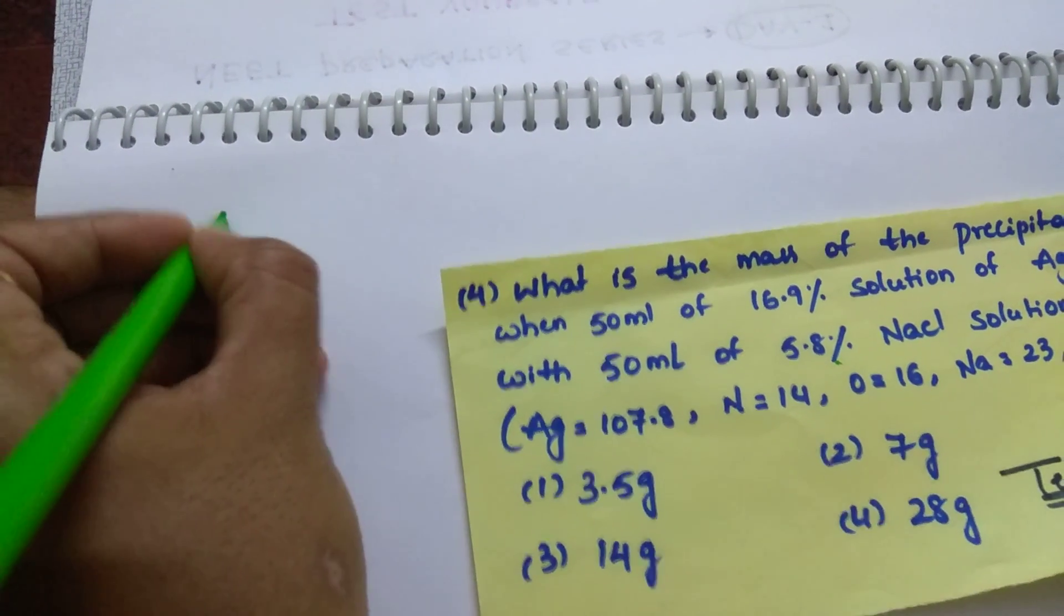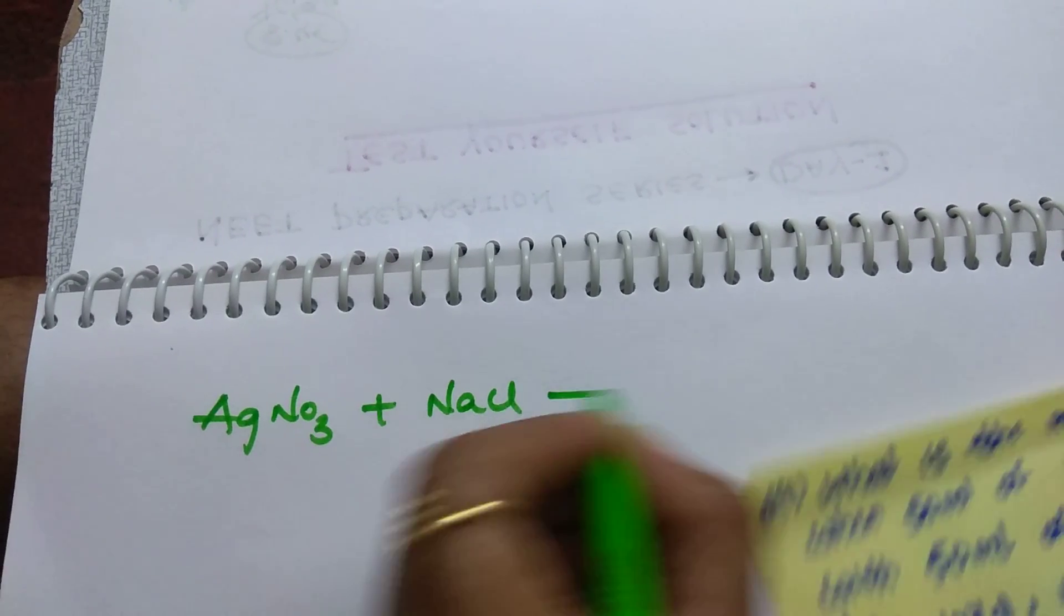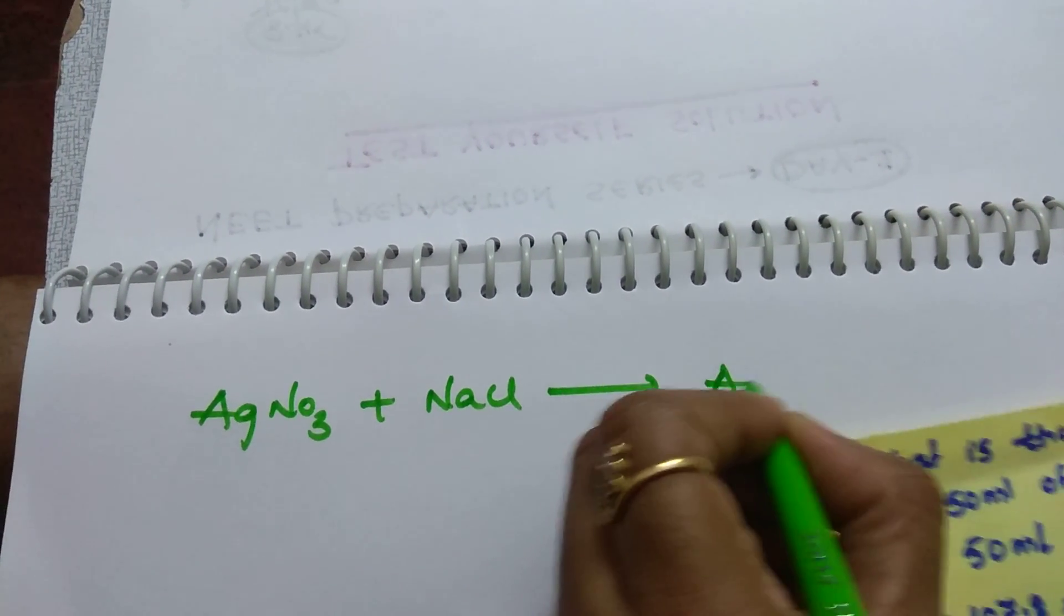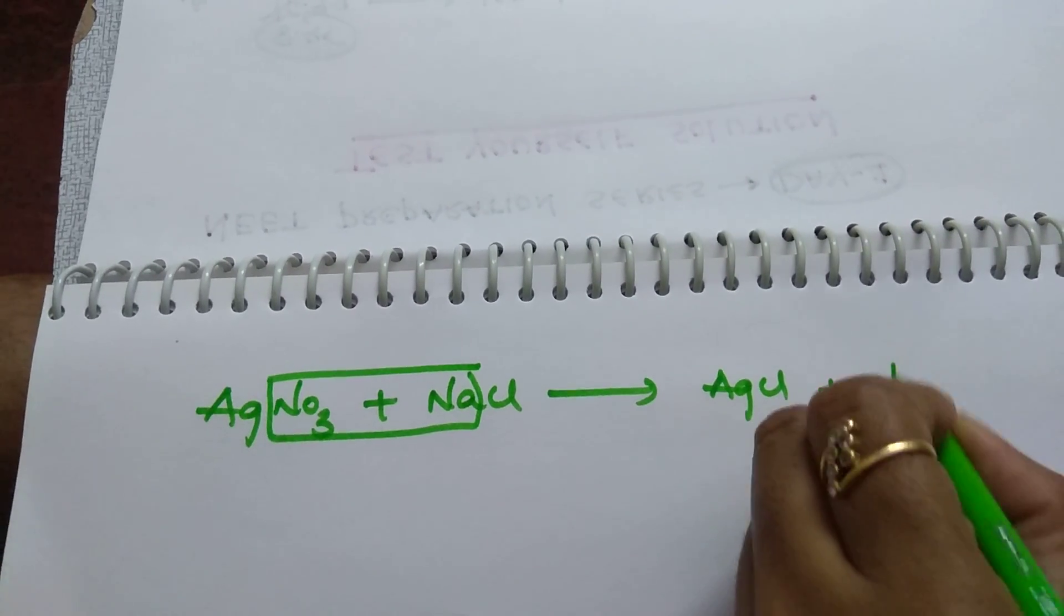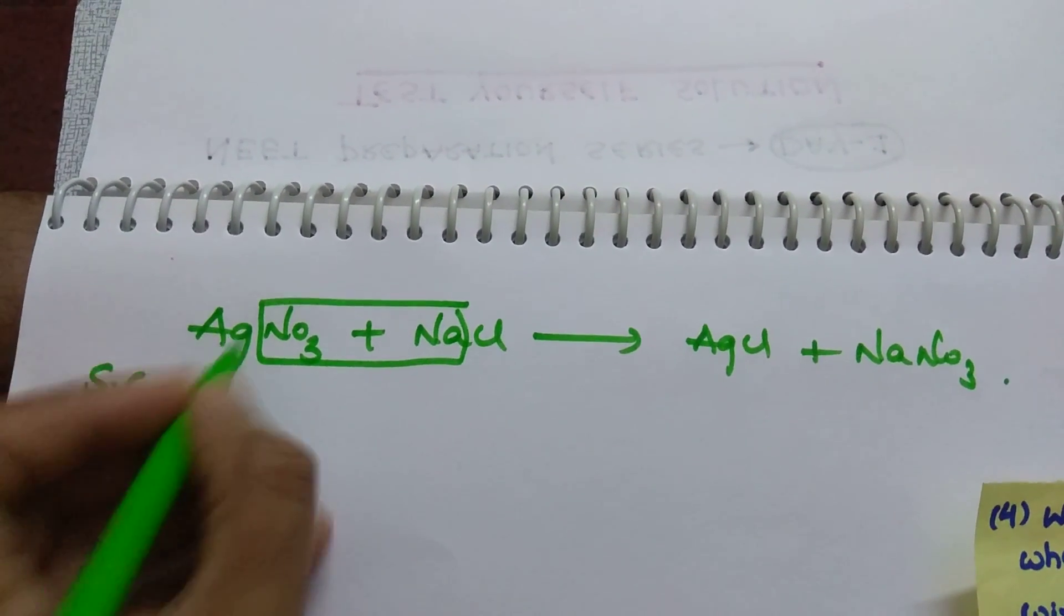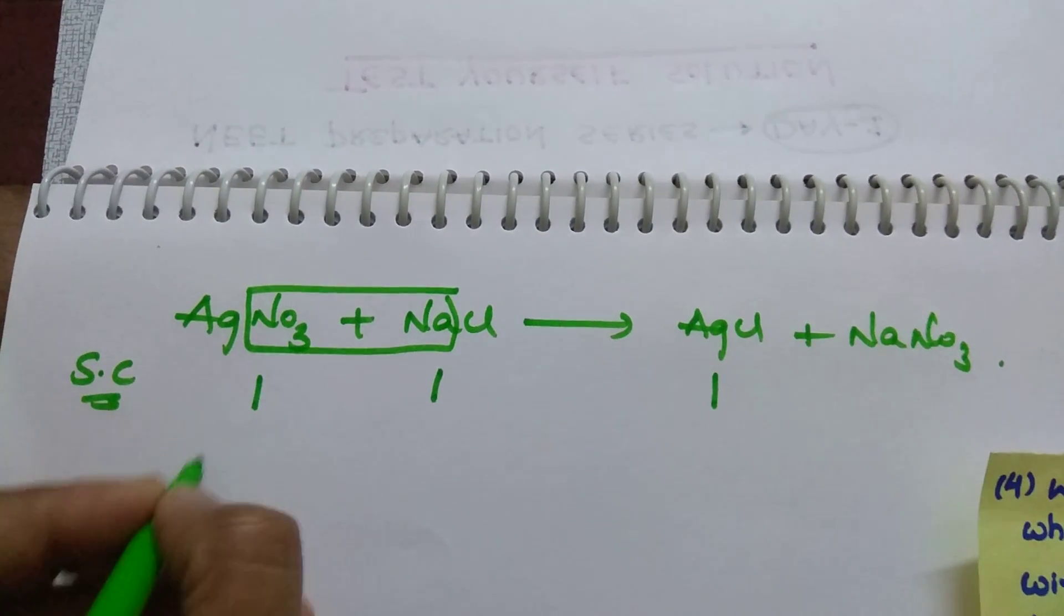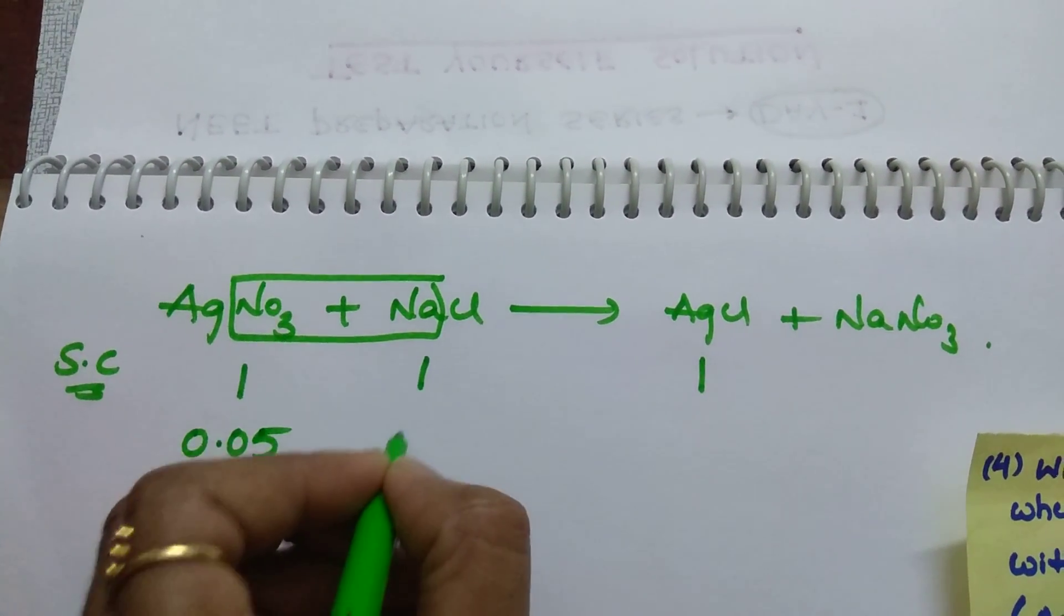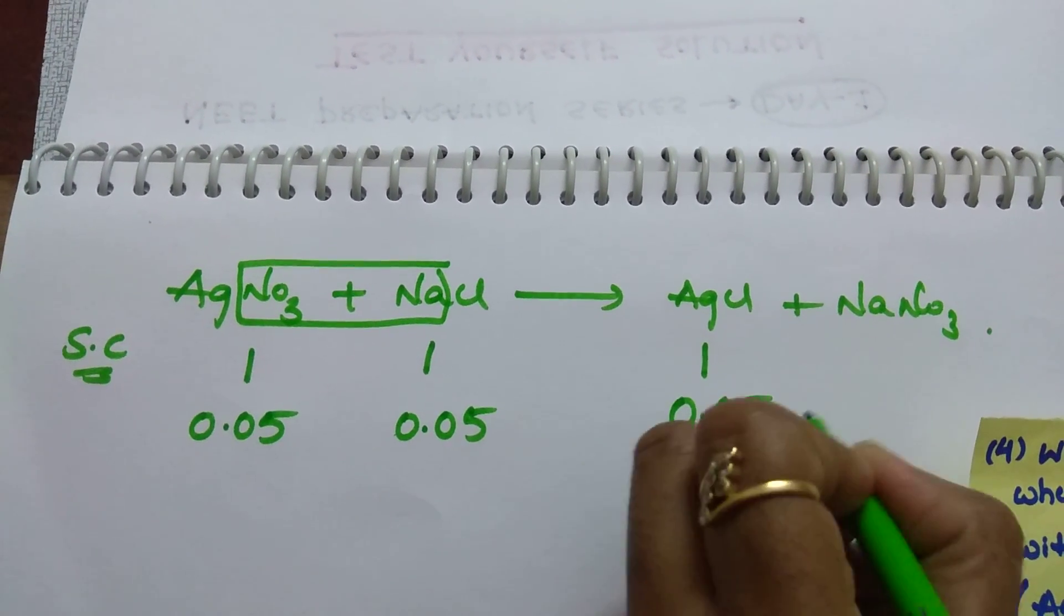So you got AgNO3 moles 0.05 and NaCl also 0.05. Let us take the reaction. AgNO3 is reacted with NaCl. Then you get AgCl plus NaNO3. See the stoichiometry ratio. 1 mole reacts with 1 mole and forms 1 mole. Now what we got 0.05 mole. This also we got 0.05 mole. So how much we get AgCl? 0.05 mole.